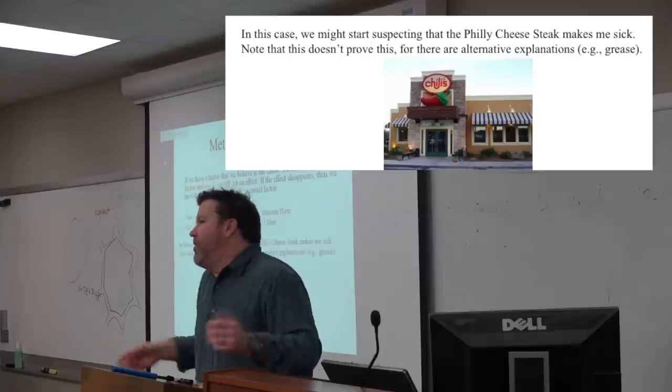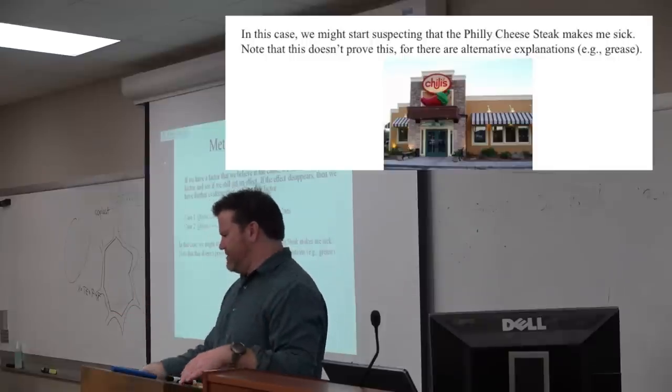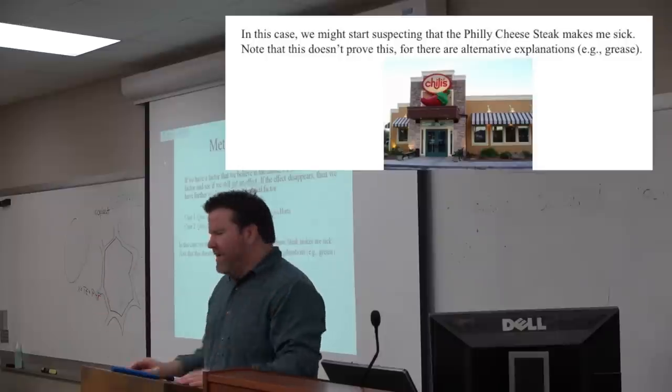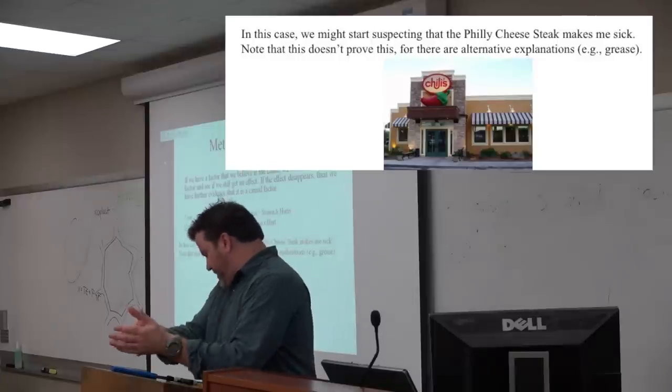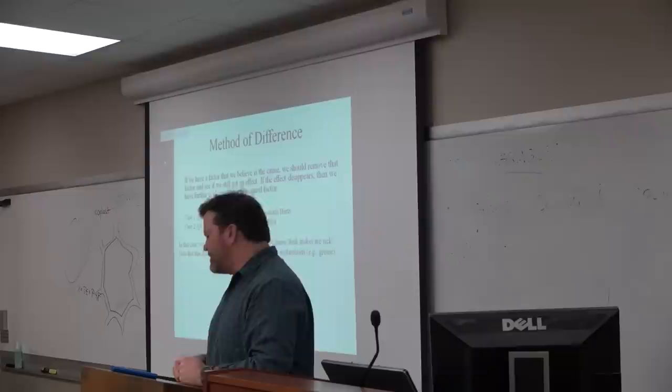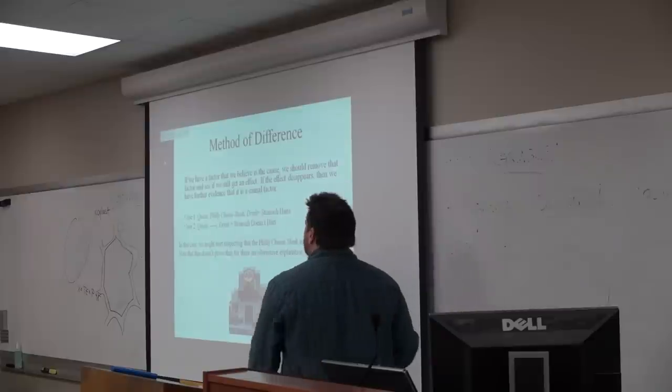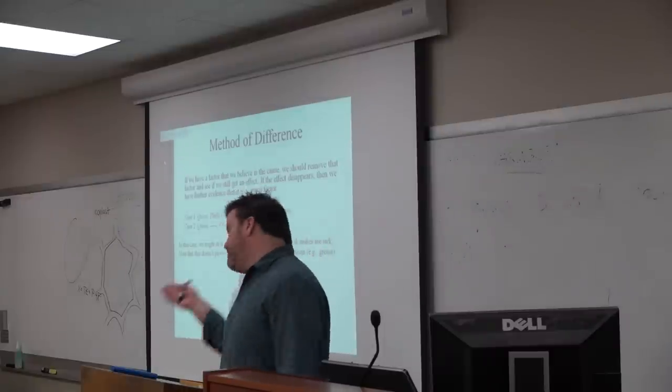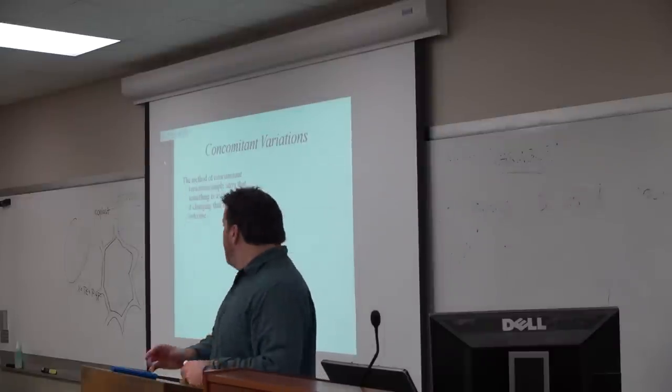Let's say I think it's the queso. So I would then have no queso. I don't know how I would go to Chili's and not get their queso. So this would be the method of difference. I remove a factor and see what happens at this point. So I'm looking for naturally occurring situations. And in this case, I might think to myself, huh, the last time I went, I didn't get the Philly cheesesteak because it wasn't on the menu, and I don't feel that bad. So I'm like, huh, maybe the Philly cheesesteak.